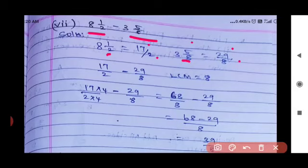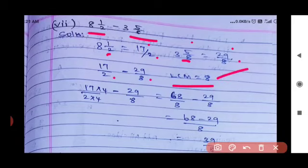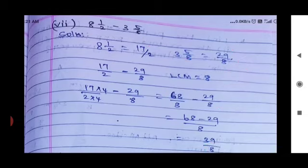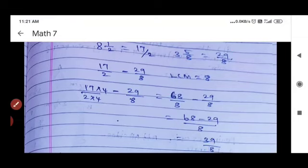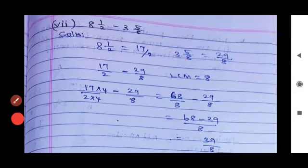The denominators are 2 and 8. Take LCM, which is 8. Convert: 17/2 × 4 = 68/8. Then 68/8 − 29/8 = 39/8. The answer is 39/8.